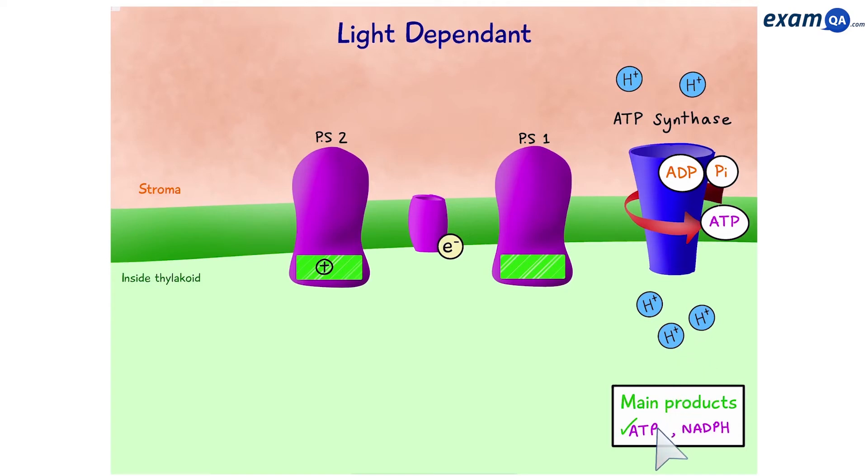So, we've made one of our products. Let's see how the next one's made. The electron moves on to the next photosystem, PS1. Once again, it gets hit by light energy and gets excited. However, this time, we don't have an electron carrier for it to go to. So, a molecule of NADP comes along, grabs an electron and a hydrogen ion to form NADPH, also known as reduced NADP. And we've made our second product.